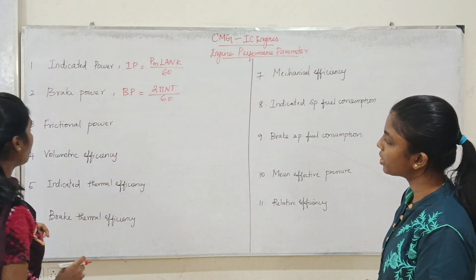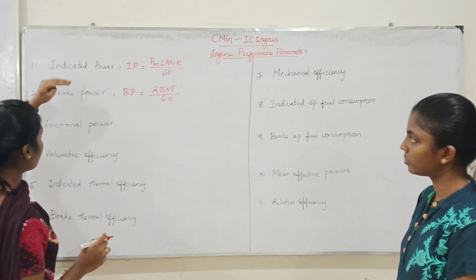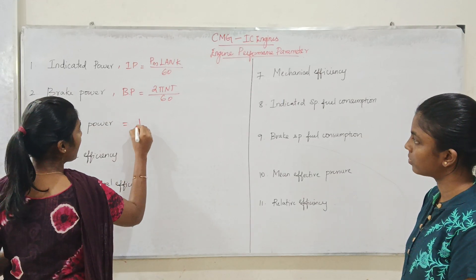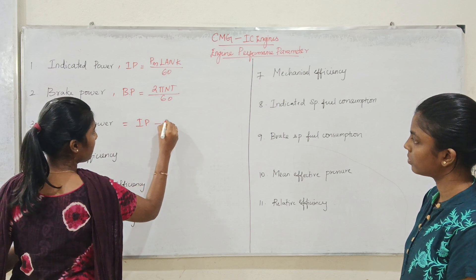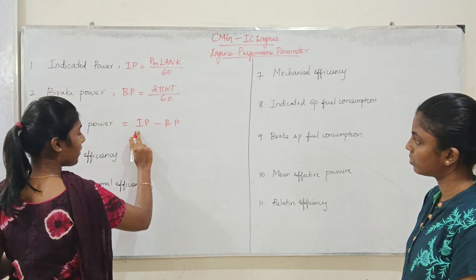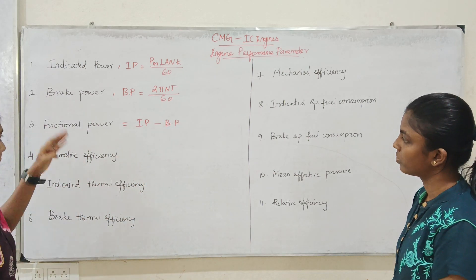Next, Frictional Power. Frictional power is equal to Indicated Power minus Brake Power, that is IP minus BP.